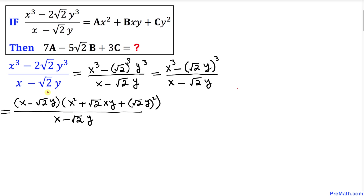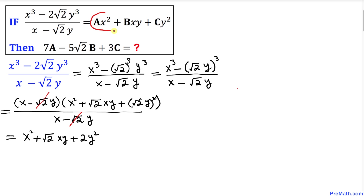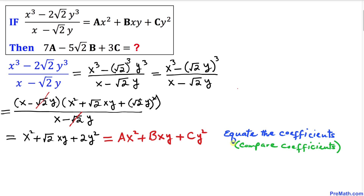Here we can see that (x minus √2y) in the numerator and (x minus √2y) in the denominator cancel each other out. So the left-hand side simplifies to x² plus √2xy plus 2y². This equals the right-hand side: ax² plus bxy plus cy².